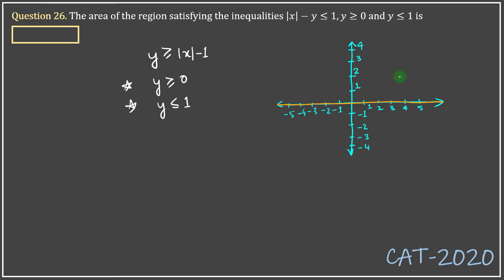y is less than or equal to 1 would be below y is equal to 1. So between these two lines but again there is another graph that we need to make. y is greater than or equal to mod of x minus 1. So first let me draw y is equal to mod of x minus 1.